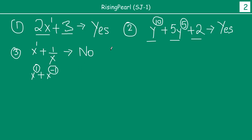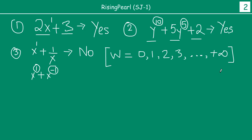Now recall, dosto, whole numbers ko we write them as the letter W. And this is nothing but a collection of numbers like 0, 1, 2, 3, 4, etc., till plus infinity. From our last series, series 1, where we explored numbers, we have seen that the whole number is nothing but a collection of 0, 1, 2, 3, 4 all the way to plus infinity. So whenever we come across a term in a polynomial jaha pe variable is raised to a power which is not a whole number, then we say that is not a polynomial.